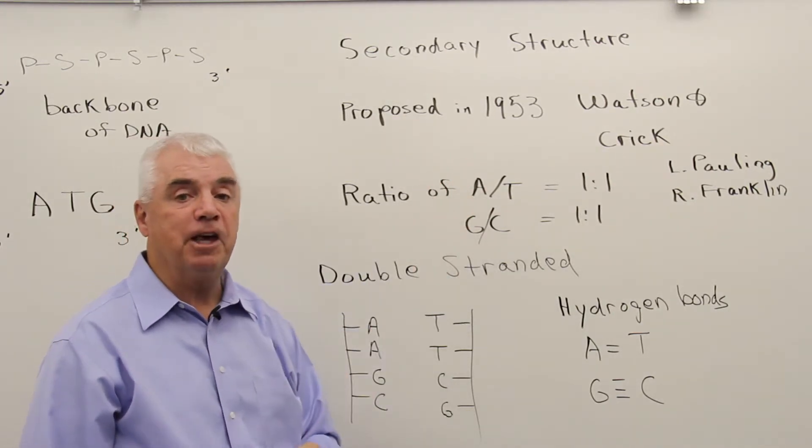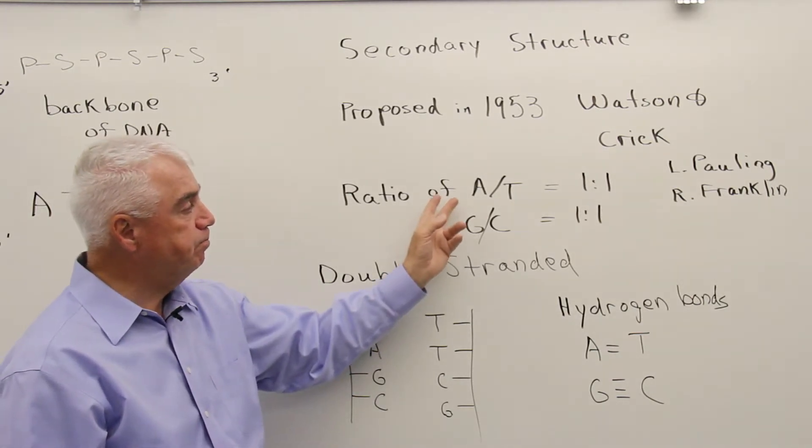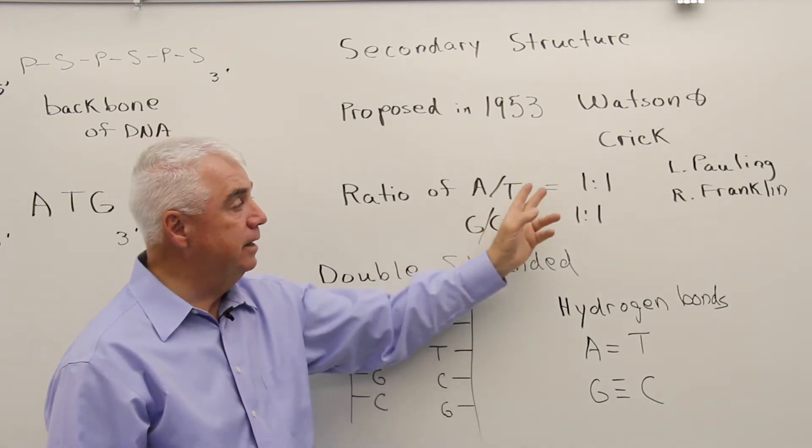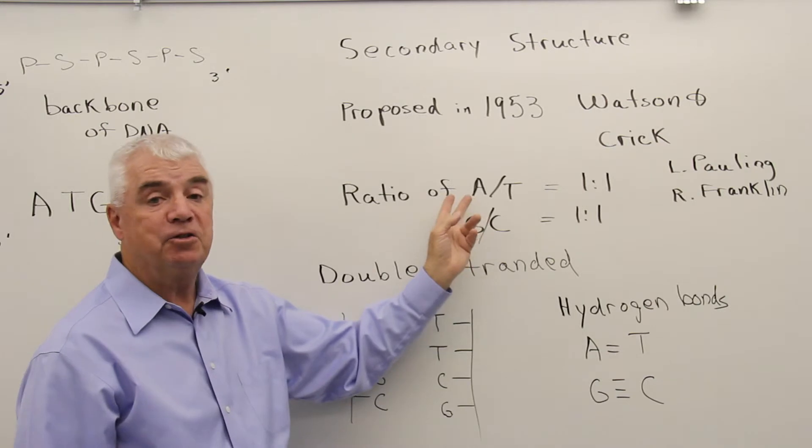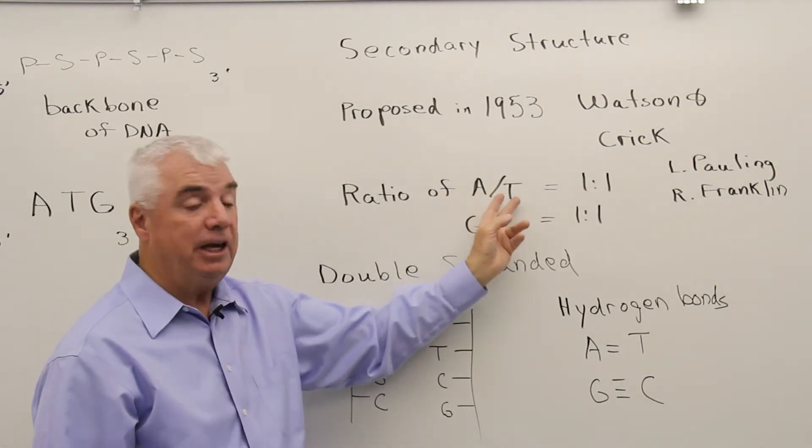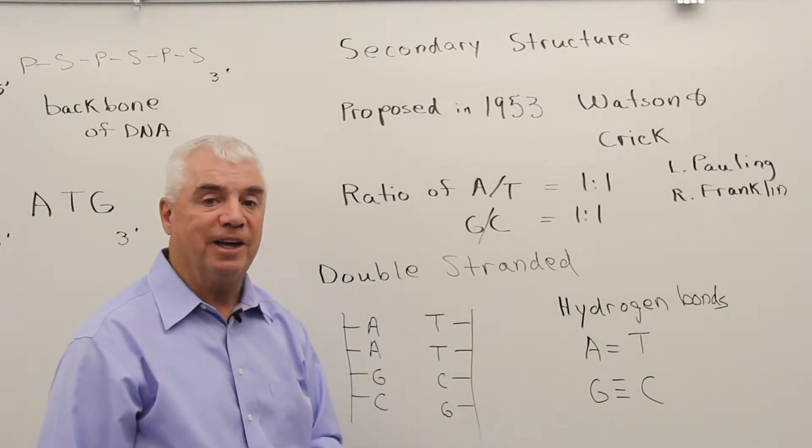One of the pieces of chemical information that Watson and Crick had at that time was that the ratio of A and T in a DNA molecule is one to one. That is to say, the amount of A equals the amount of T, and the amount of G equals the amount of C.